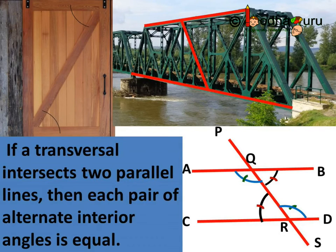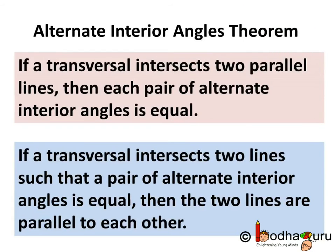From the result we can conclude, if a transversal intersects two parallel lines, then each pair of alternate interior angles is equal. So now you know the alternate interior angles theorem, which says: if a transversal intersects two lines such that a pair of alternate interior angles is equal, then the two lines are parallel to each other.